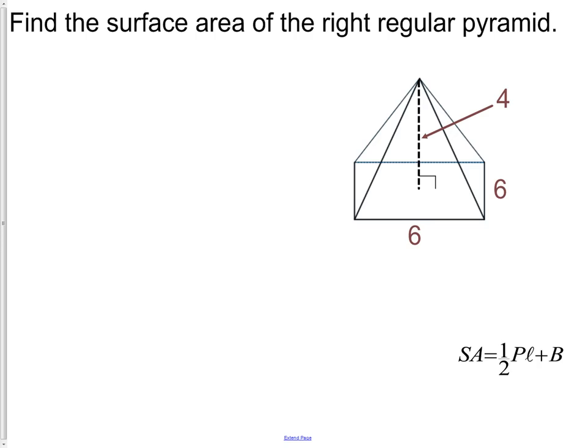Well, the base part is pretty easy, so that's not going to be too hard. But we have to get the P and the L. So let's first write down our formula. Surface area equals one-half perimeter times slant height plus the area of the base.